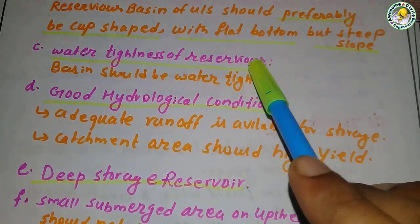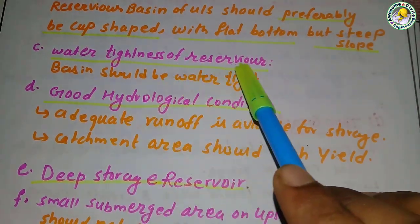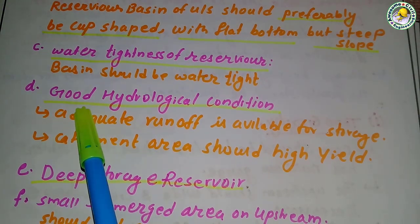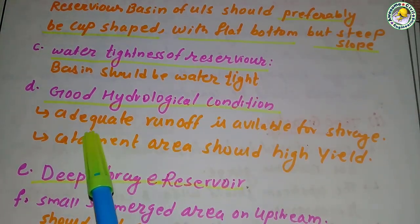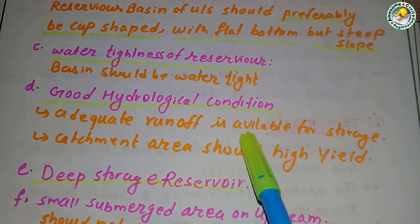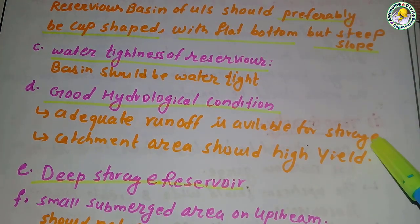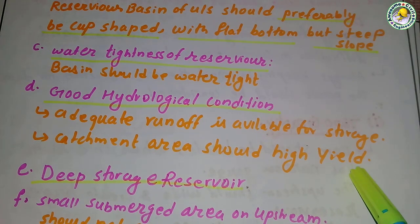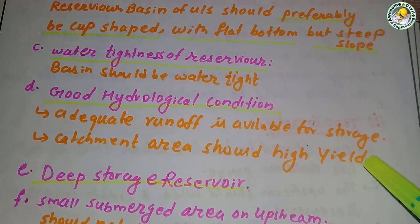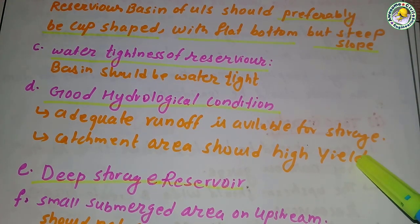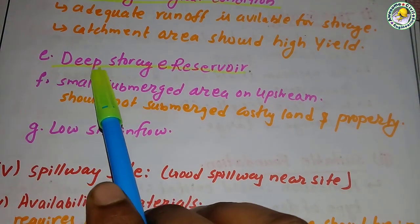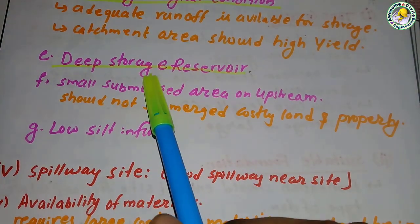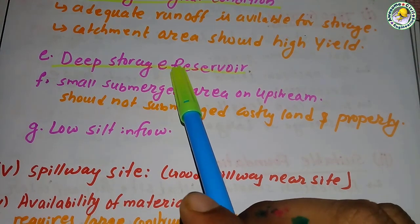The reservoir basin should be watertight. Point D — good hydrological conditions: adequate runoff should be available for storage, and the catchment area should be large in order to collect a high amount of water. Point E — deep storage: the storage on the upstream should be deep.